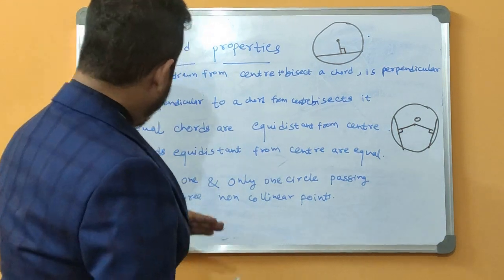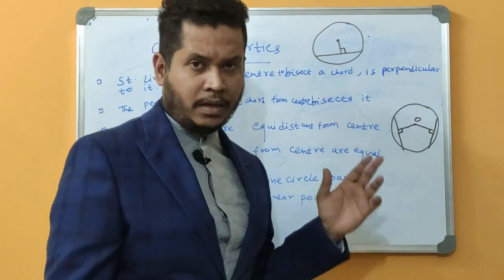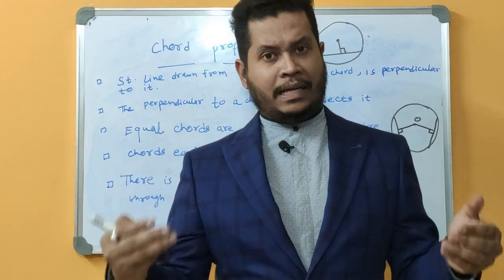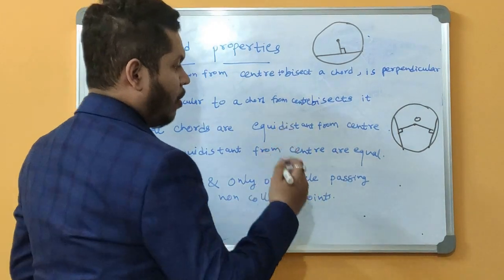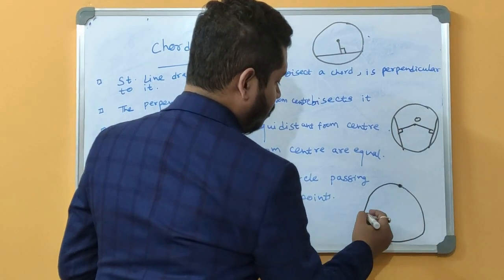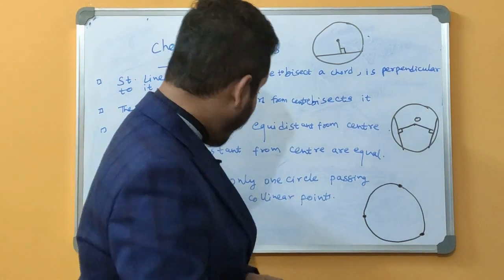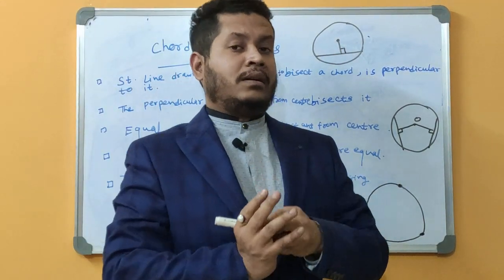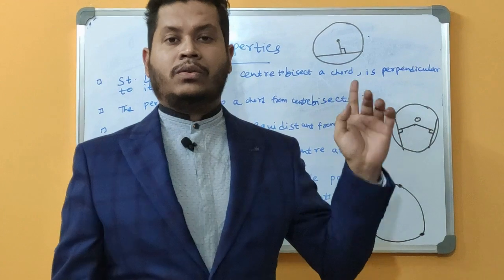The fifth property states that there is one and only one circle passing through three non-collinear points. Non-collinear points are points that are not on the same line. So if we take any three non-collinear points, we can always draw exactly one circle passing through them. This circle is unique — we cannot have two different circles passing through the same set of three non-collinear points.